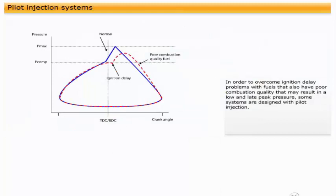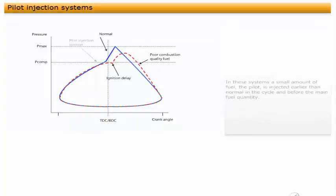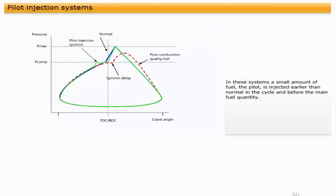In order to overcome ignition delay problems with fuels that also have poor combustion quality that may result in a low and late peak pressure, some systems are designed with pilot injection. In these systems, a small amount of fuel, the pilot, is injected earlier than normal in the cycle, and before the main fuel quantity.